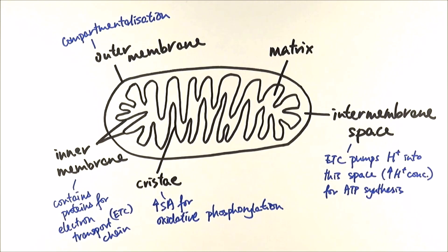Keep in mind that mitochondria used to be a bacterium. Very early on, when life was just forming, our cells absorbed this bacterium and recognized it as beneficial. We developed a symbiotic relationship, and eventually through evolution it just became part of our cell.